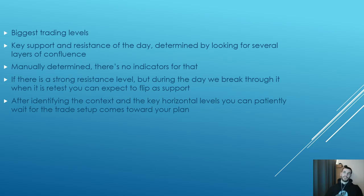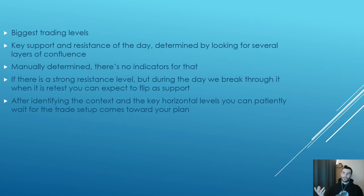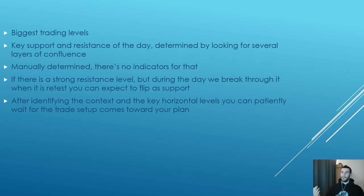Key support and resistance for the day are determined by looking for several layers of confluence manually — there are no indicators for that. If there is a strong resistance level and during the day we break through it, when it retests you can expect it to flip as support. Identify the context and key horizontal levels, and you can patiently wait for trade setups that come toward your trading plan.